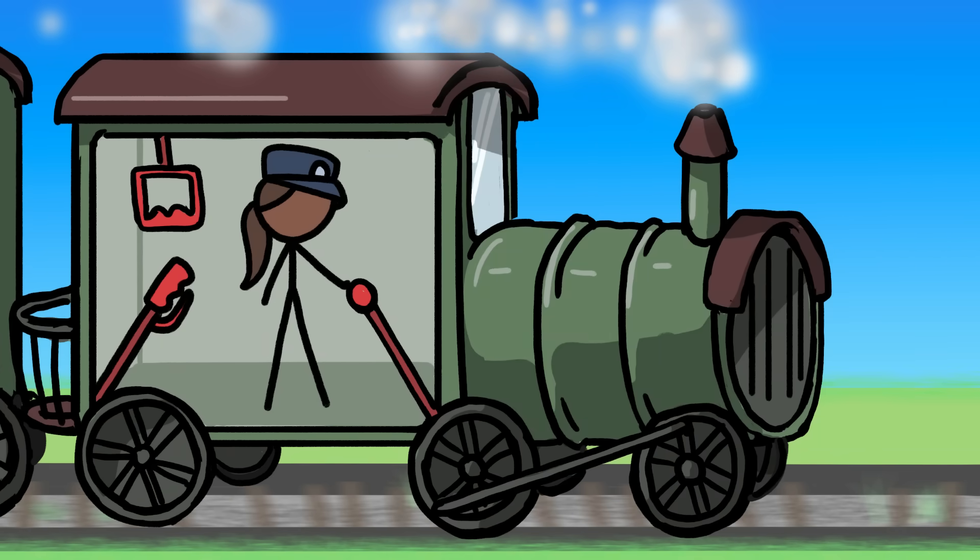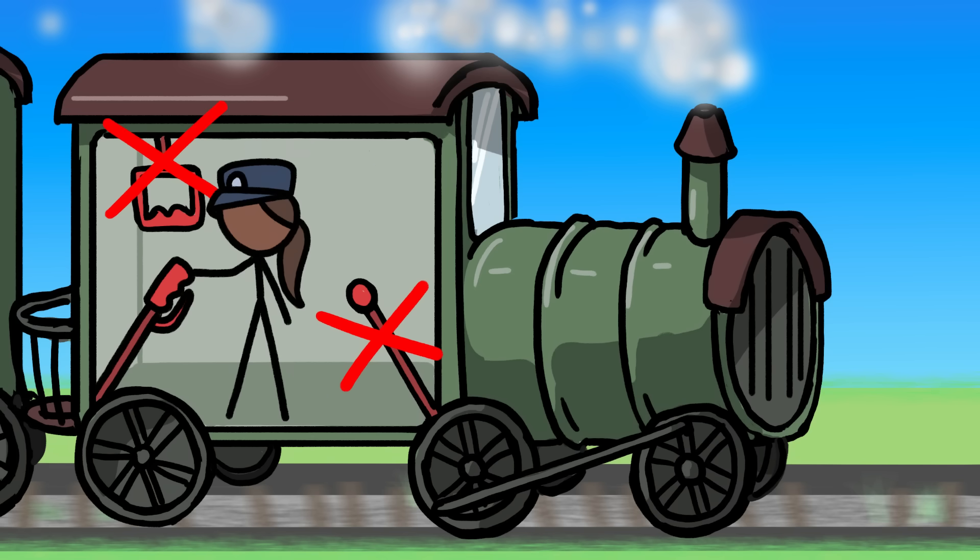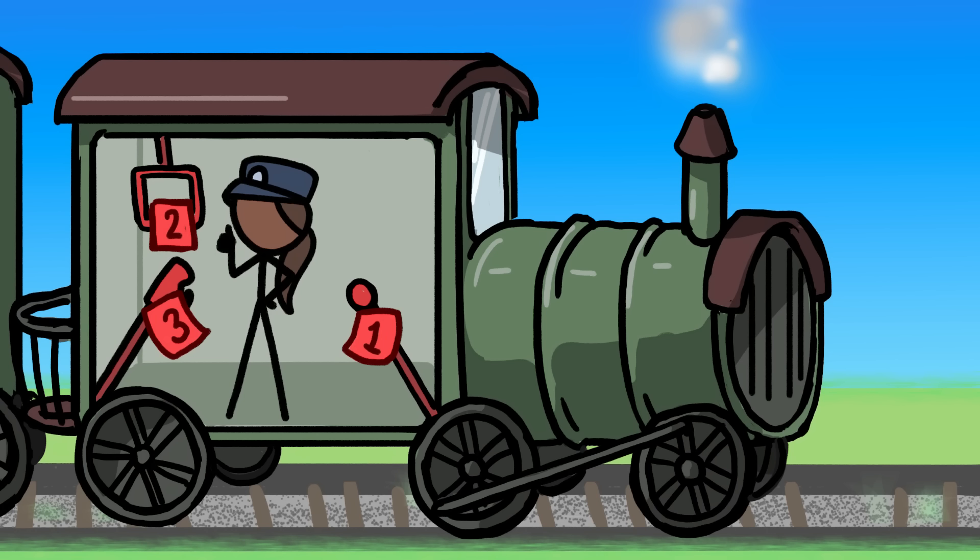In the not-all-that-unlikely event that a train's brakes fail, most trains have a backup set of brakes. And in case that fails, a third braking system. This redundancy keeps the train safe even if something goes wrong.